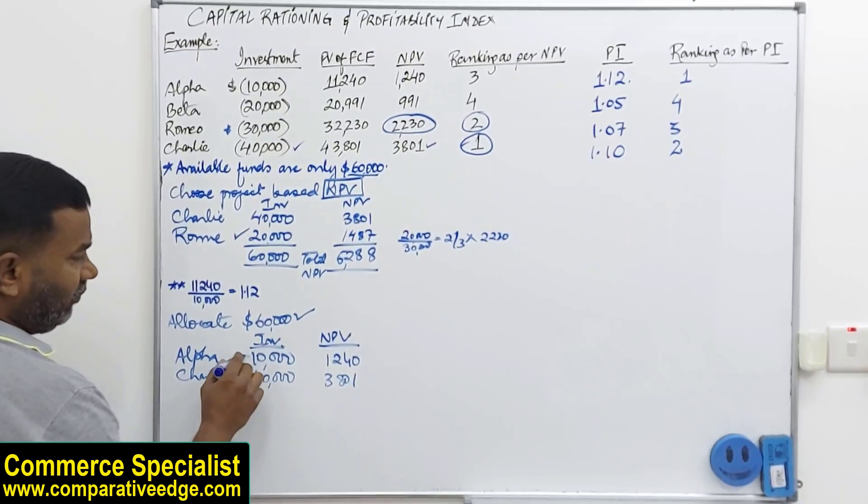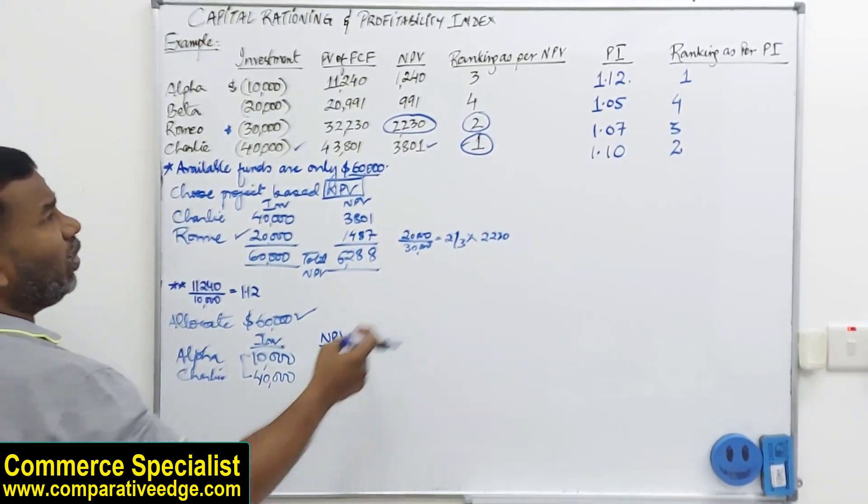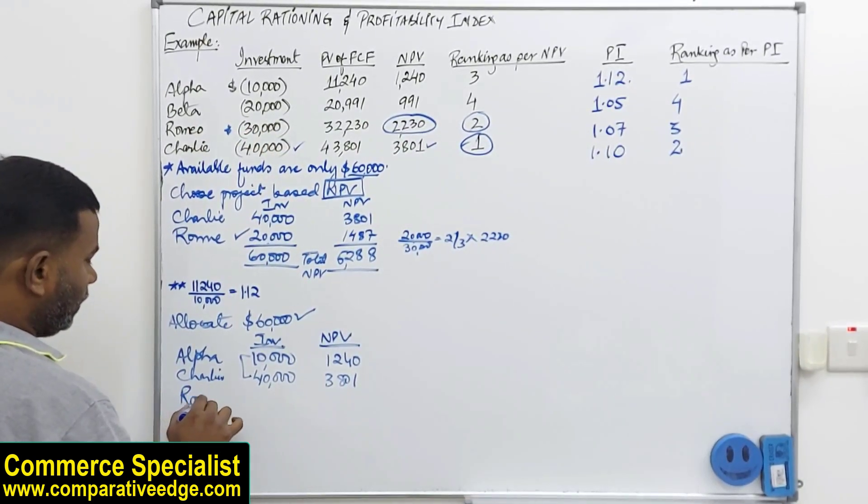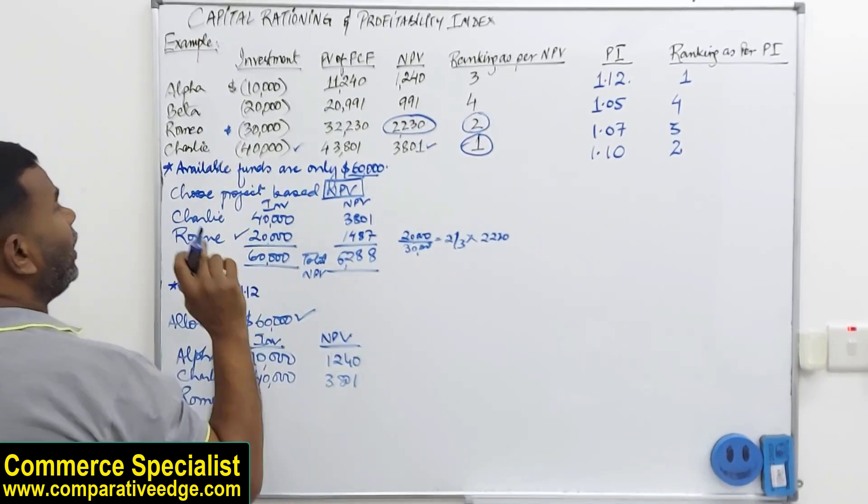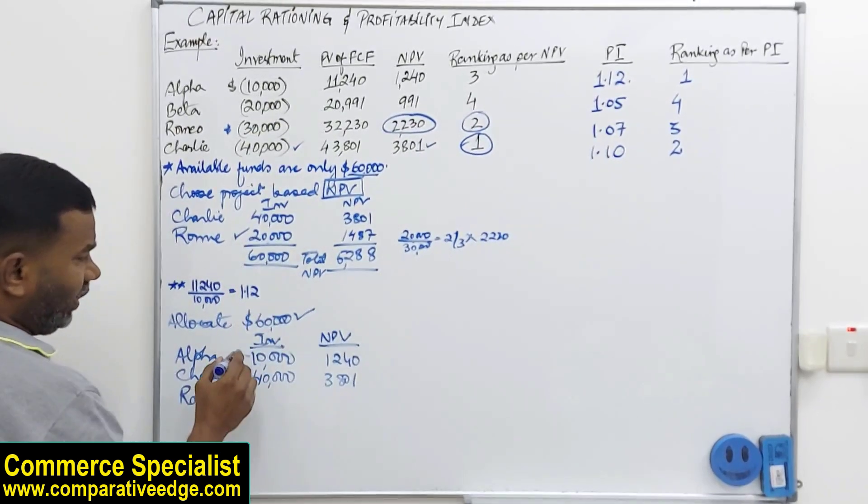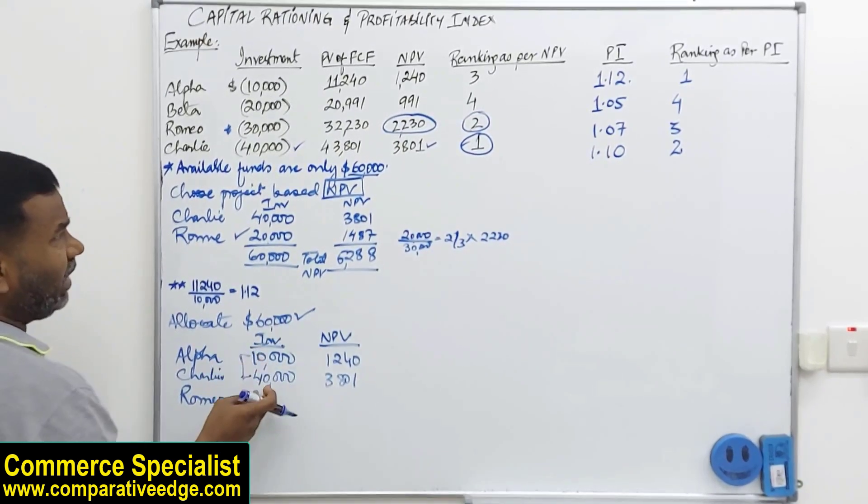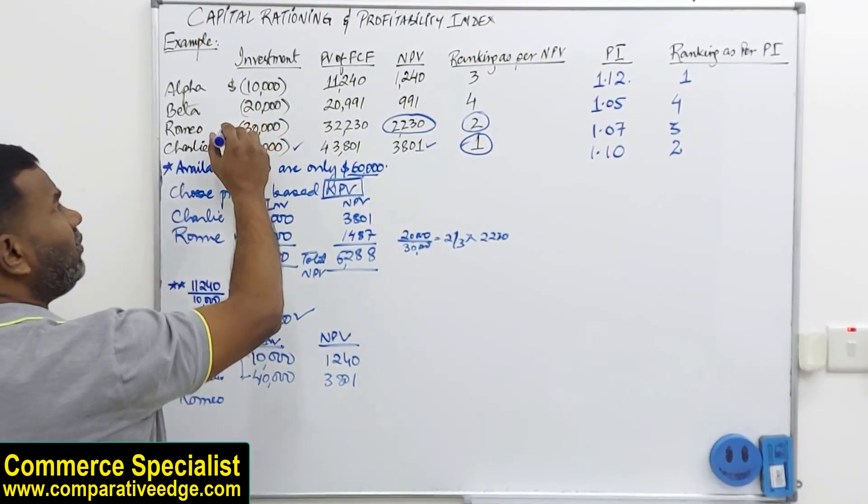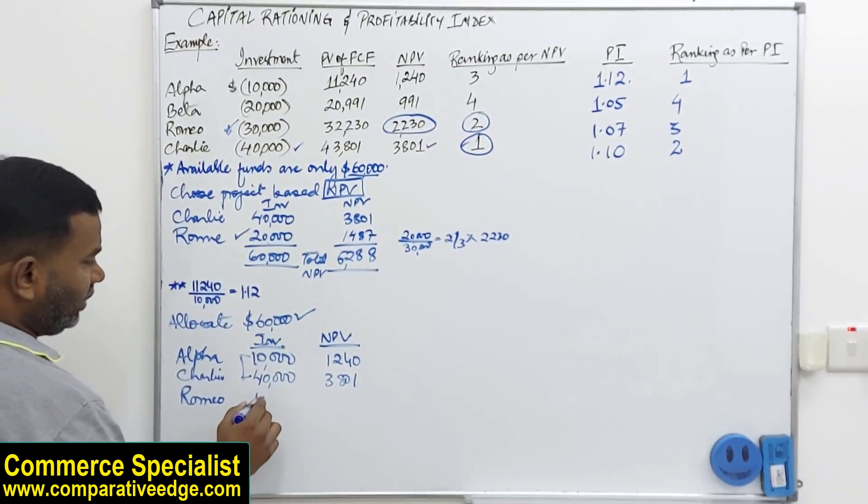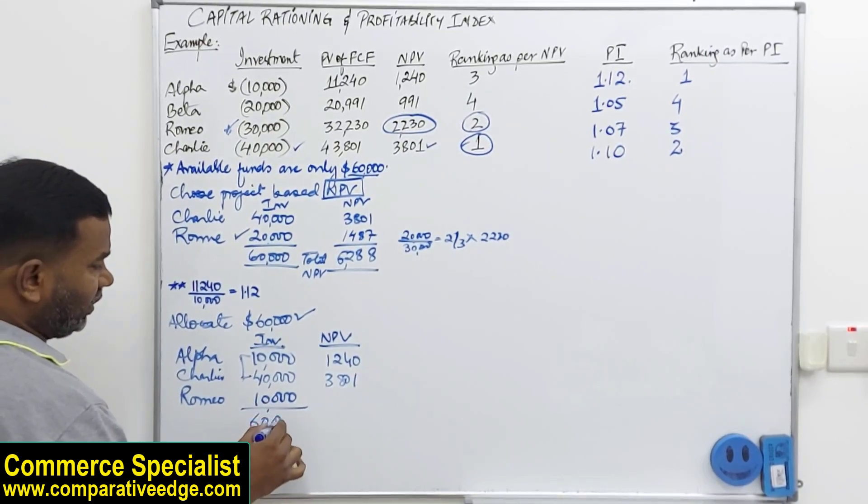So 50,000 is already invested. I have total 60,000. Remaining 10,000 is there. What is my third option? Third option is Romeo. Now if you see, Romeo requires 30,000 and I am only left with, I have already invested 50. I have 60,000. I will only invest 10,000. So total investment required is 30 but I am investing only 10,000 here. So that's how all my 60,000 is invested.